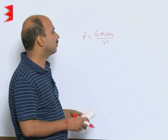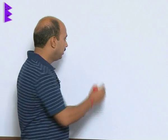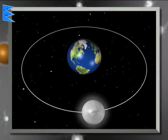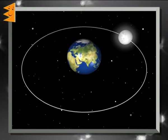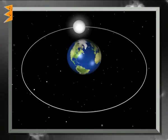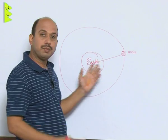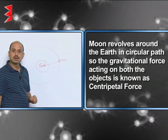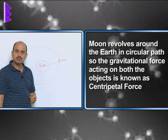Gravitational force is also present between the Earth and the Moon. The Moon revolves around the Earth in a circular path. There is a gravitational force between the Moon and Earth, and since it is a mutual force, both apply this force on each other.